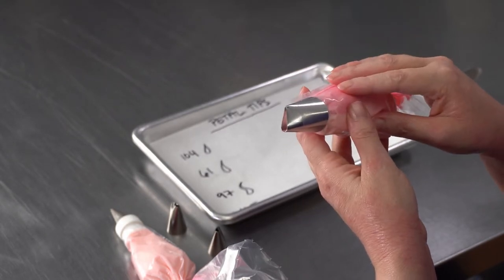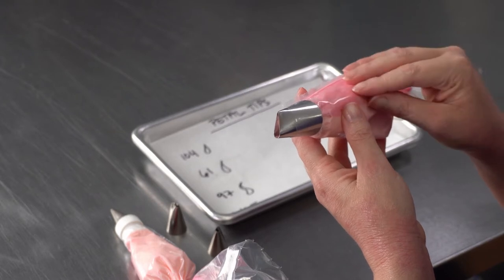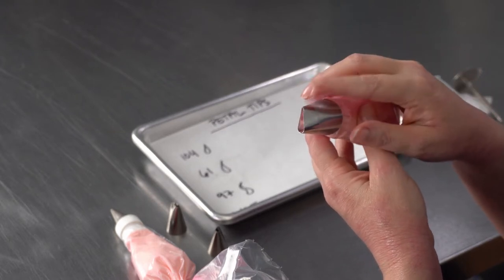So the main thing that you want to do is anytime you're going to make a flower, you want to think about how big you want it to be and pick out an appropriate size tip for the job.